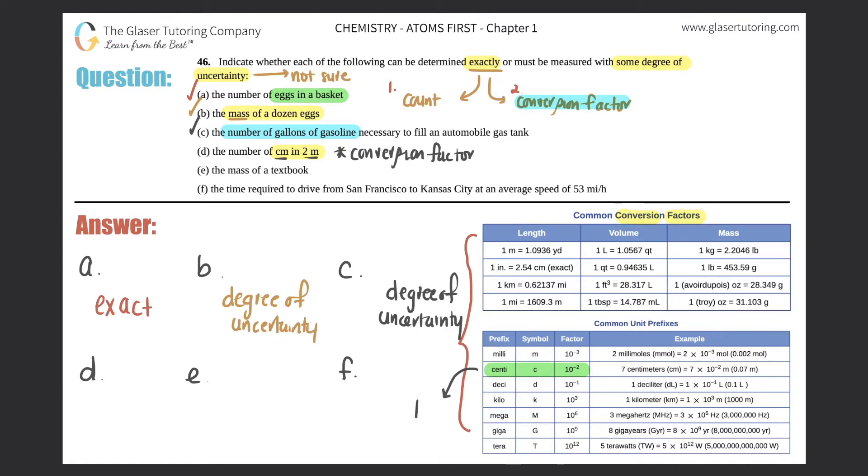But to read this, this chart is telling me that 1 meter equals, actually, we'll do it the opposite way. We'll go with this flow right here. So we'll say 10 to the negative 2 meters equals 1 of the prefix, 1 centimeter. So that's a conversion factor. 10 to the negative 2 meters, which is the same thing as 0.01 meters is the same thing as 1 centimeter. That's a conversion factor. And if you know that conversion factor, you could find out exactly how much is in 2 meters by doing the math. So this would be an exact measurement, or you could find it out exactly.